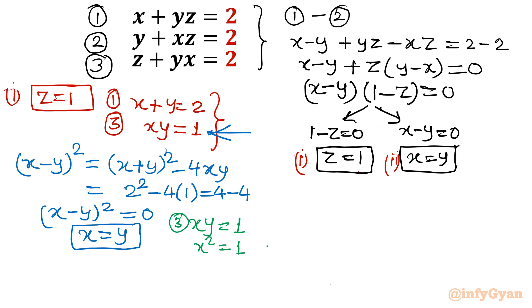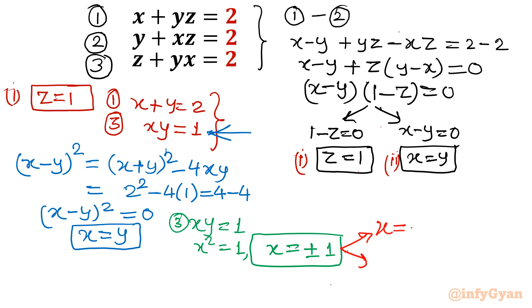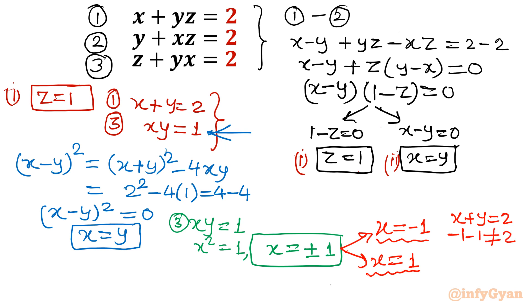From x squared equal to 1, we conclude x equal to plus or minus 1. Checking x equal to minus 1 in equation 1: minus 1 plus minus 1 does not equal 2, so this solution is rejected. Therefore x equal to 1 is accepted.